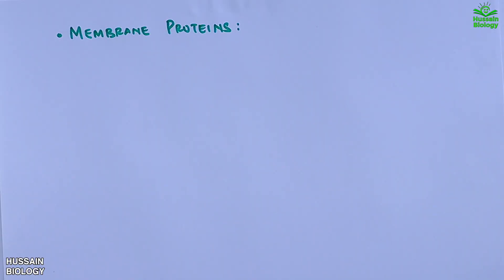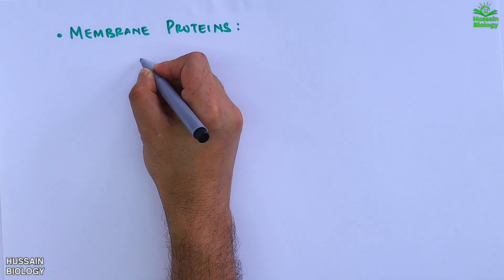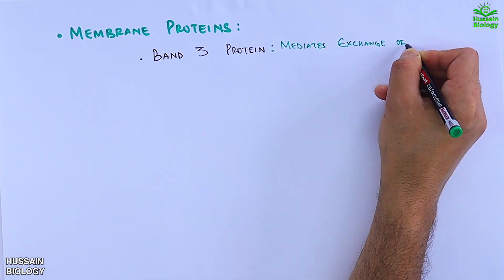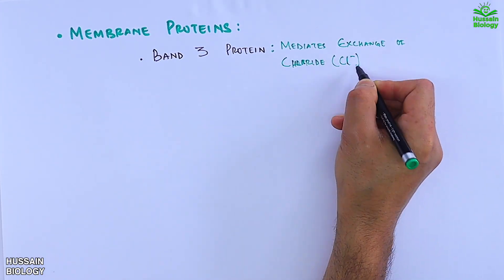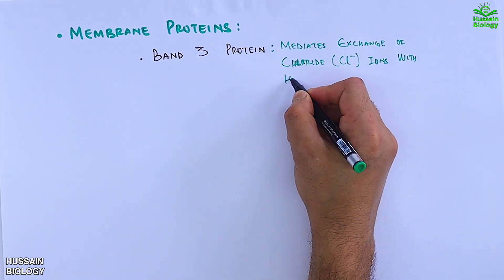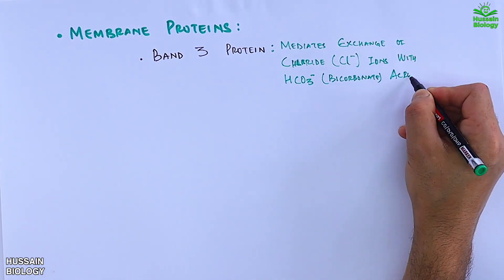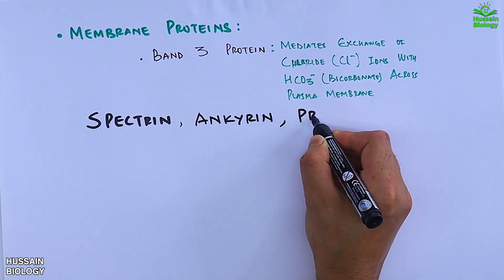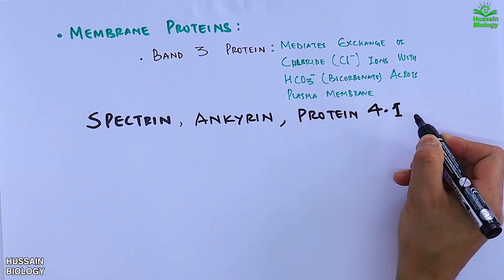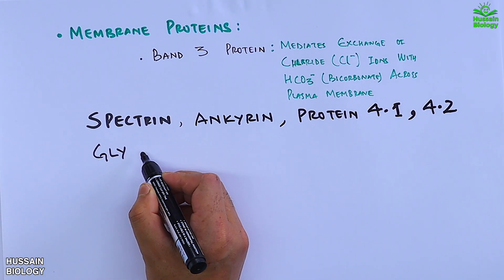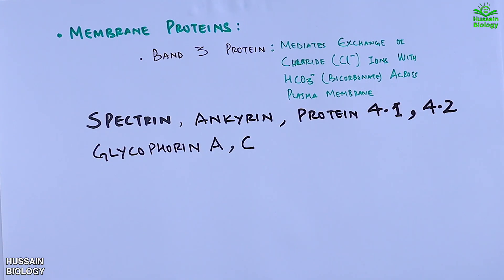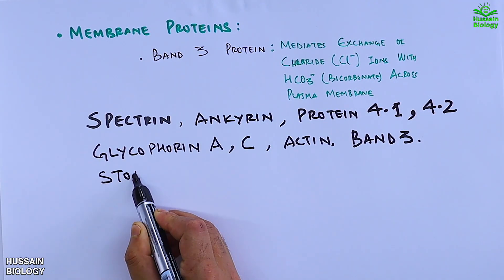Then we have the membrane proteins, starting with band 3 protein, which mediates exchange of chloride ions with bicarbonate ions across the plasma membrane. Then we have spectrin protein, ankyrin protein, protein 4.1, protein 4.2, glycophorin A, glycophorin C, actin, stomatin, and CD47.